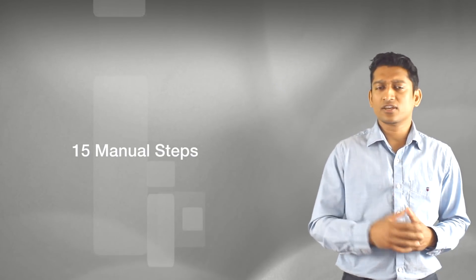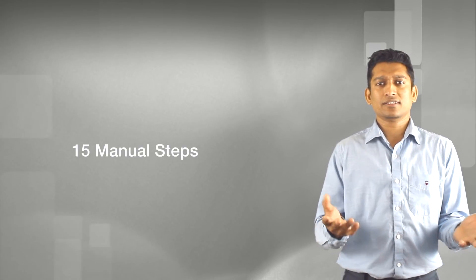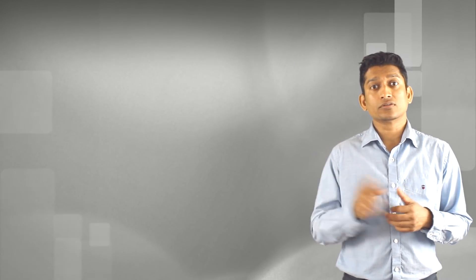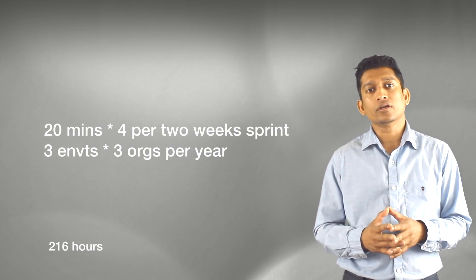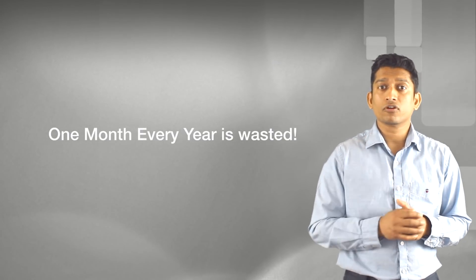So — merge and CI — does that sound familiar? You might ask, what's the big deal? This is a common process. That's exactly the problem I want to bring up. These 15 steps as part of the merge are considered part of our regular job and routine — it's a habit, so we don't consider it a big deal and it's ignored. In my case, this process is repeated for three environments, four times per two-week sprint, with three active orgs — that's roughly 216 hours per year. We are wasting more than a month every year following the same process.